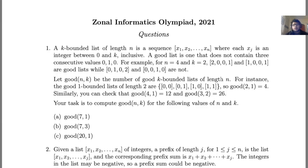So the problem states, a k-bounded list of length n is a sequence where each x_j is an integer between 0 and k inclusive. So k and n are the input variables. A good list is one that does not contain three consecutive values 0, 1, 0. So as an example, we're given n equals 4 and k equals 2, which means all values have to be between 0 and 2 and the list has to be of length 4. So we're given 2, 0, 0, 1 and 1, 0, 0, 1 are good lists, because they don't contain 0, 1, 0 anywhere.